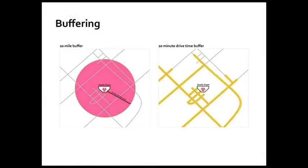Here's an example: a serious emergency situation in a mid-sized town in the United States — a terrible, nasty, deadly diaper biohazard. On the left-hand side, you can see what would happen if I drew a 20-mile buffer outward from this spot. You might give this map to local authorities so they could evacuate people away from this horrible biohazard.